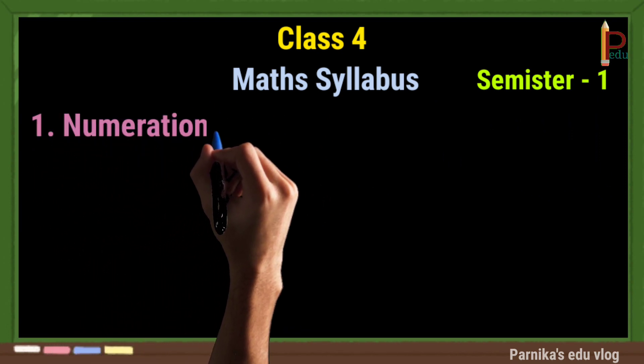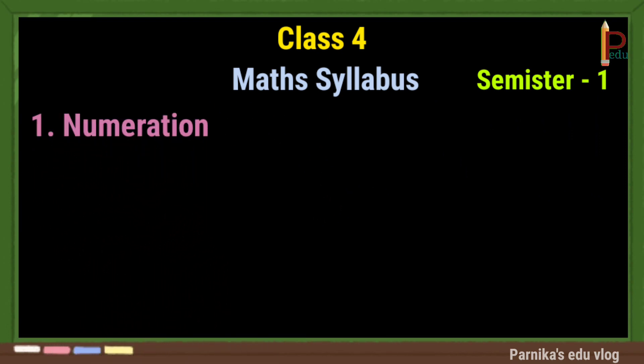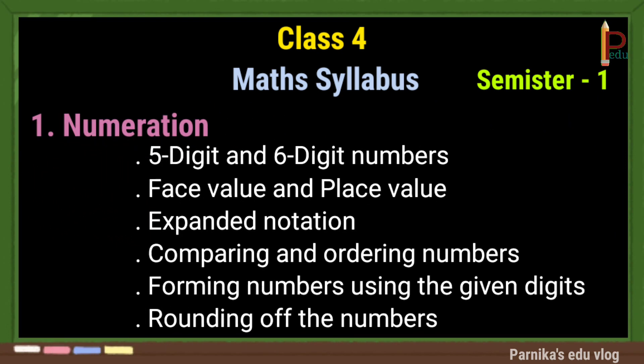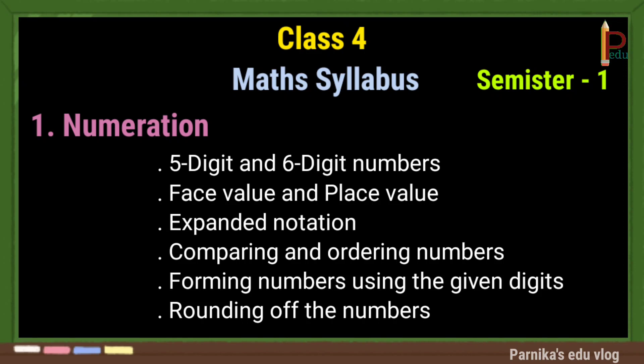The first chapter is Numeration. It contains 5-digit and 6-digit numbers, face value and place value, expanded notation, comparing and ordering numbers, forming numbers using the given digits, and rounding of numbers.